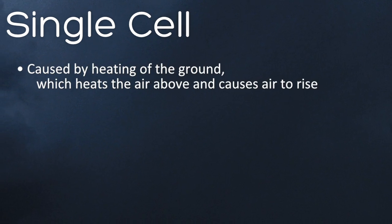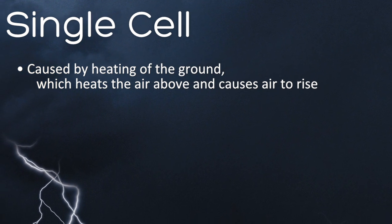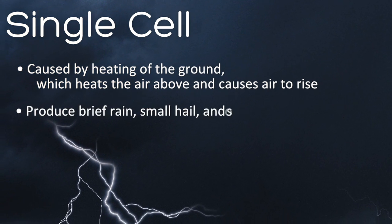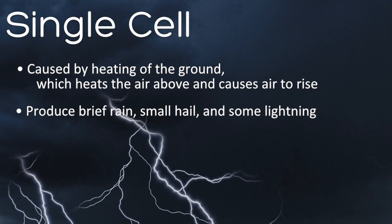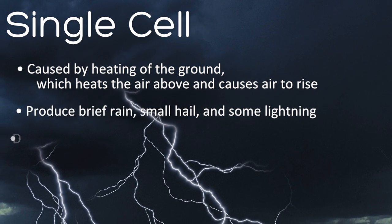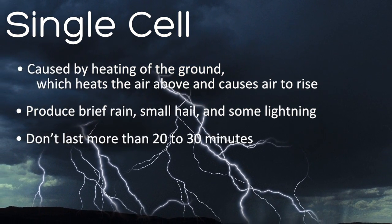Single cells are the pop-up thunderstorms you may see on a warm summer afternoon. They are caused by heating of the ground, which heats the air above and causes air to rise. These types of thunderstorms may produce brief rain, small hail, and some lightning, but typically don't last more than 20 to 30 minutes before dissipating.